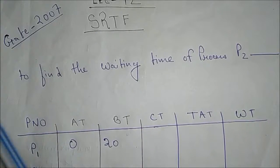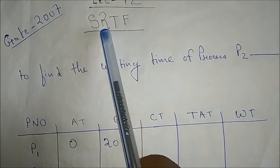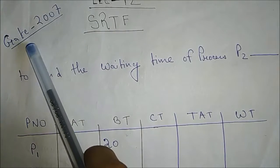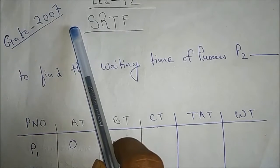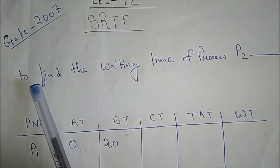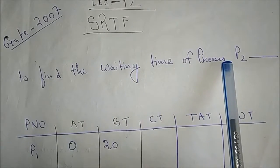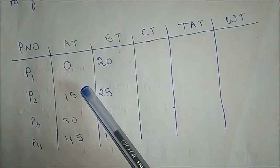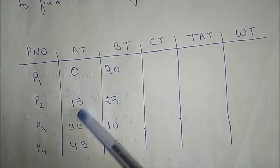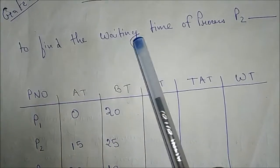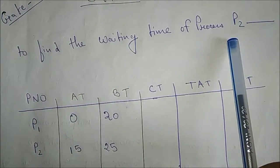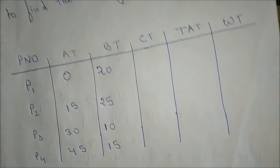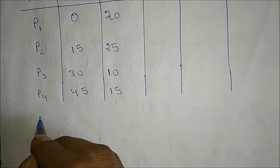This is about SRTF (Shortest Remaining Time First) — a question asked in GATE 2007. They are saying to find the waiting time of process P2. They have given the full process list with arrival time and burst time. We will start by doing the Gantt chart.